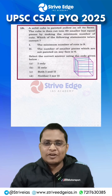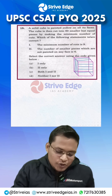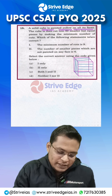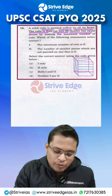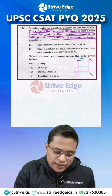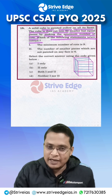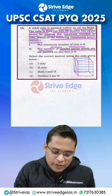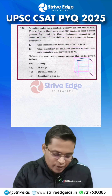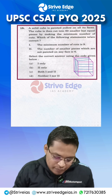Dear student, let's see this question on cubes. A solid cube is painted yellow on all its faces. The cube is then cut into 60 smaller but equal pieces by making the minimum number of cuts. We need to check whether the following statements are correct: the minimum number of cuts is 9, and the number of smaller pieces which are not painted on any face is 6.